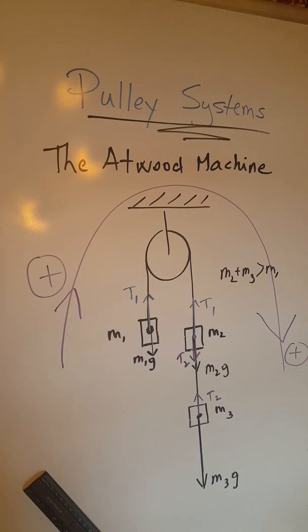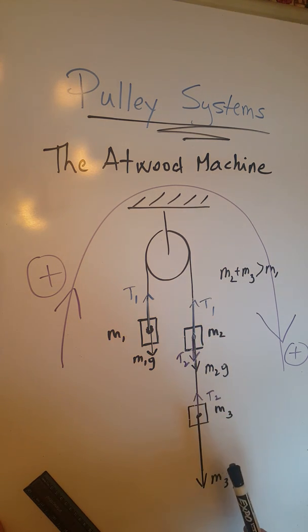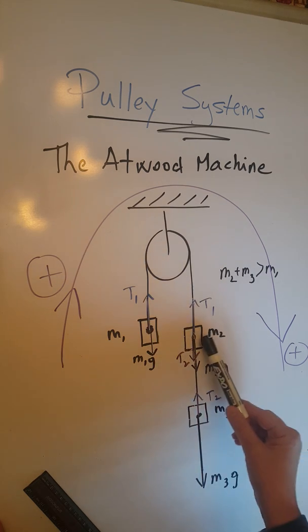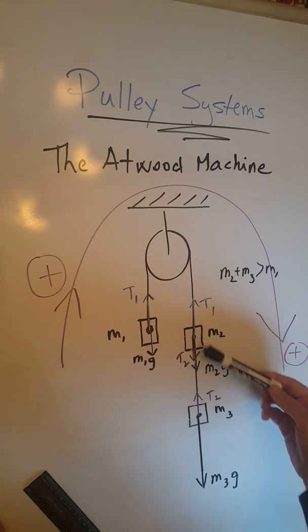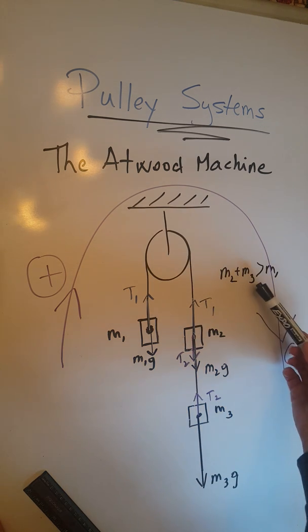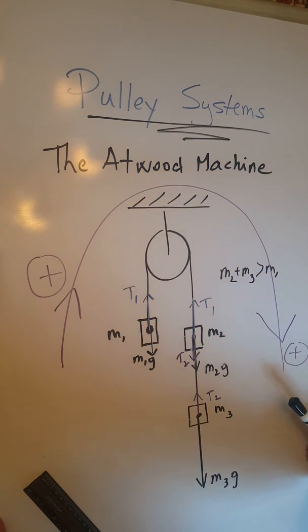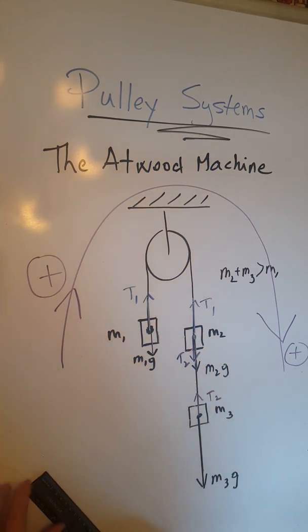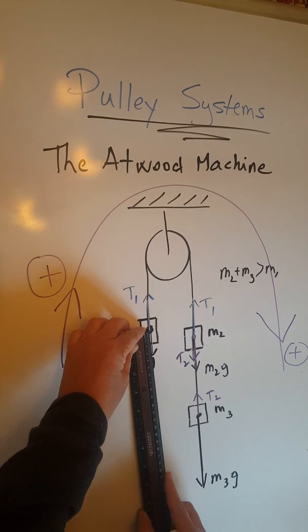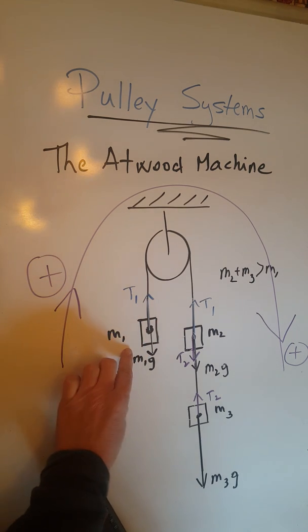Let's go ahead and do a magnitude check. We know that the forces on each of the three objects must be unbalanced in the favor of, for this one t1, for these two in the favor of the forces going downwards, because again m2 plus m3 is greater than m1, so this whole system must accelerate this way. So let's start with m1: t1 is 5 centimeters, m1g is 3.5 centimeters, so t1 is greater than m1g, we're good there.